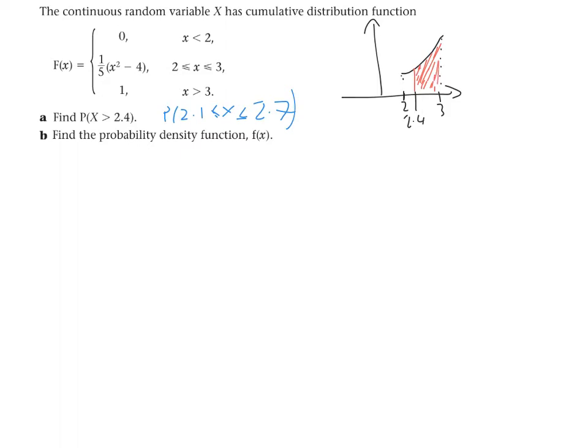Now, the way the cumulative distribution function works is that if we substitute a value into our function, it will tell us the area from the start up to that value. So, if I do f of 2.4, that is doing a fifth of 2.4 squared minus 4. Which, when we calculate that, we'll get 0.352.